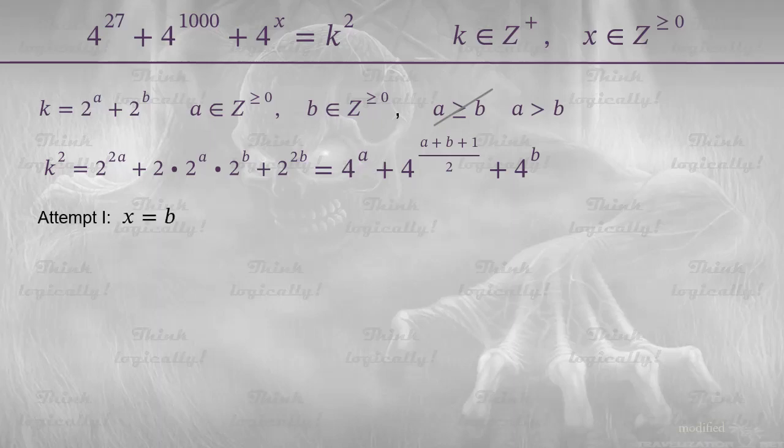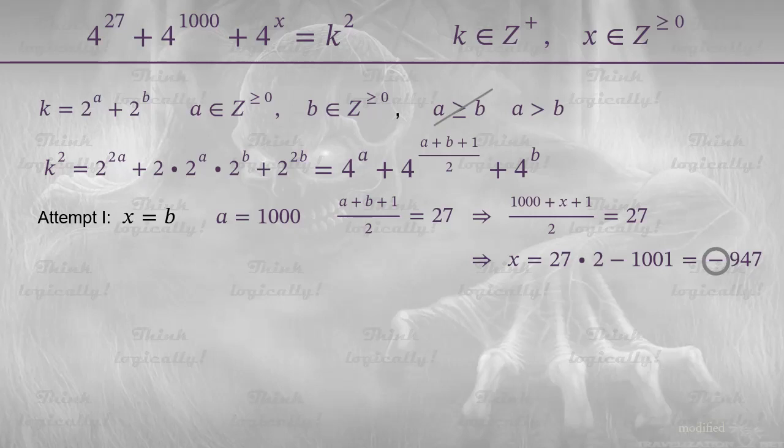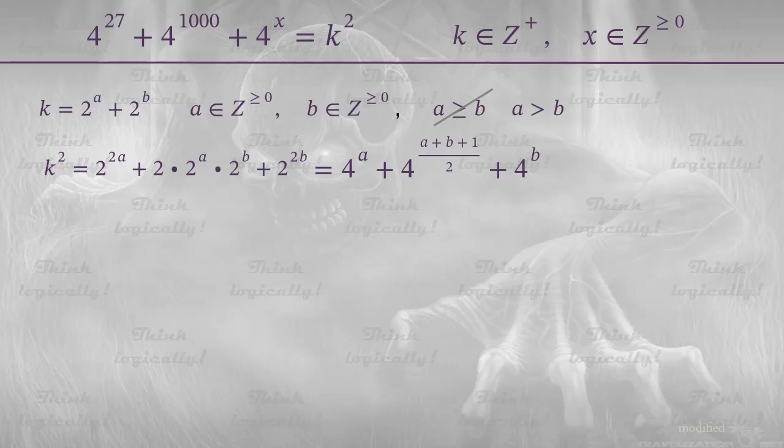Attempt 1. x equals b. In this case, due to the non-increasing order of the exponents, a must be equal to 1000, and a plus b plus 1 over 2 must be equal to 27. Replacing a with 1000 and b with x gives an equation for x, giving a negative value. Therefore, attempt 1 is unsuccessful. And we move on to attempt 2.